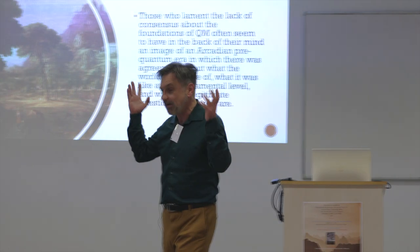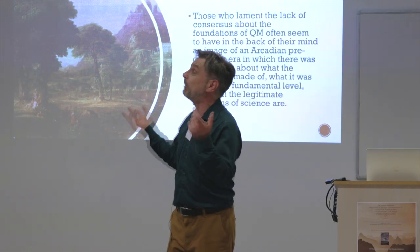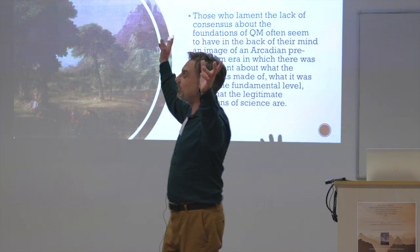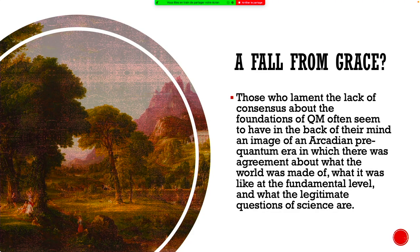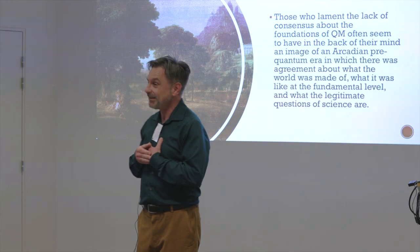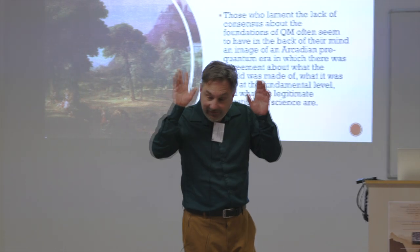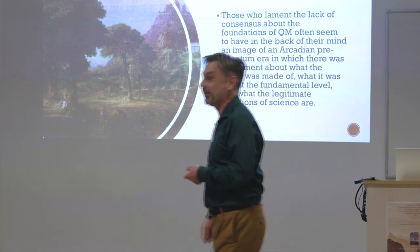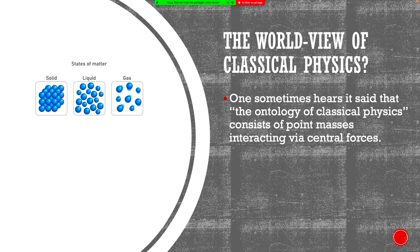And I think the picture that people have in their mind when they say this is a scandal and embarrassing is that prior to the quantum revolution, we lived in this beautiful pastoral Arcadian world when everything was in harmony and people understood what the world or thought they understood what the world was like. I think I used to think that. I used to think that before I had the slightest clue of what 19th century physics was actually like. People talk about the world view of classical physics and in the philosophical literature there's this phrase that comes up, the ontology of classical physics.